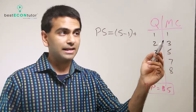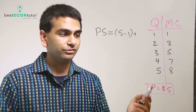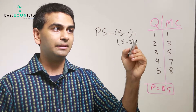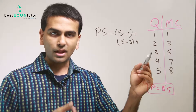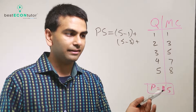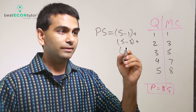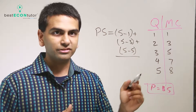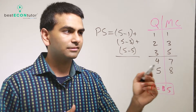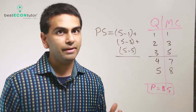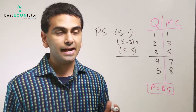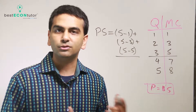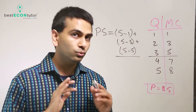With the second item it costs you three to produce, you can sell it for five, so that's five minus three. For the third item, it costs you five to make and you could sell it for five — so you can make it anyway and get no producer surplus out of it. But you wouldn't want to sell the fourth item because it would cost you seven to make, and you'd only be able to sell it for five — so you'd lose two dollars.